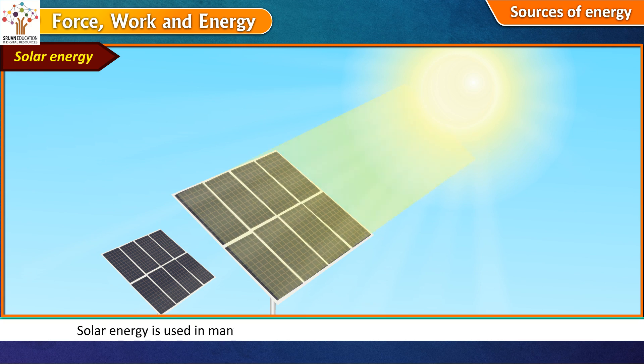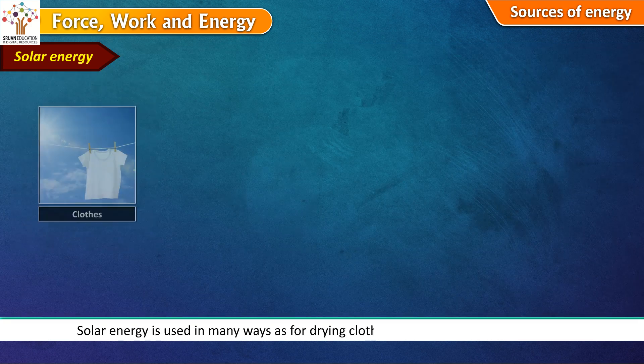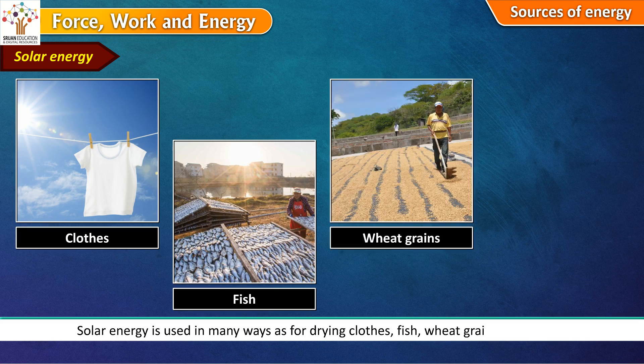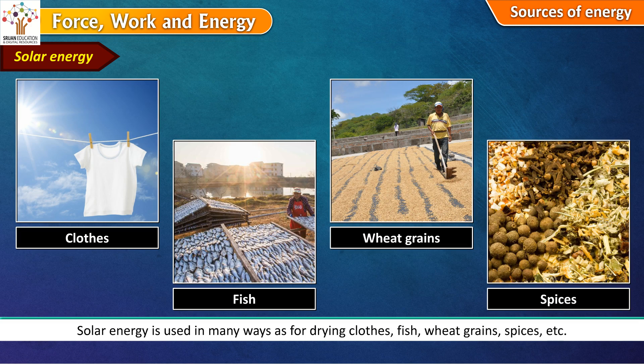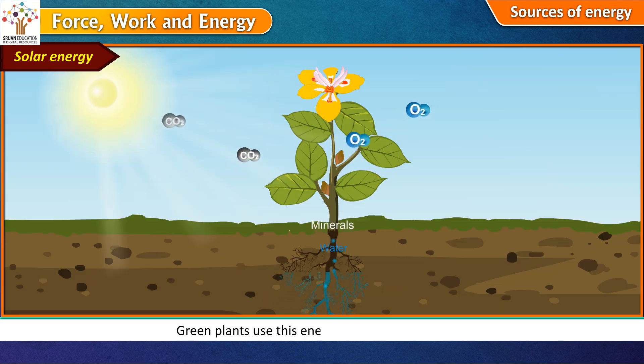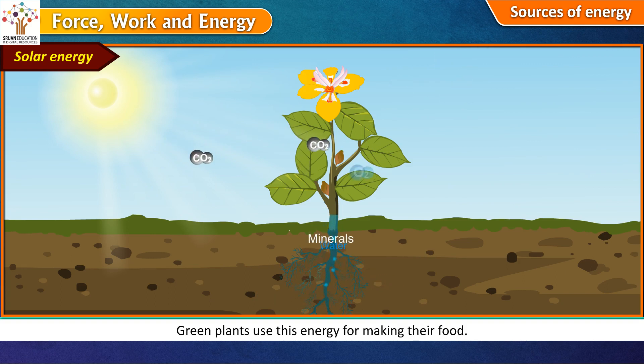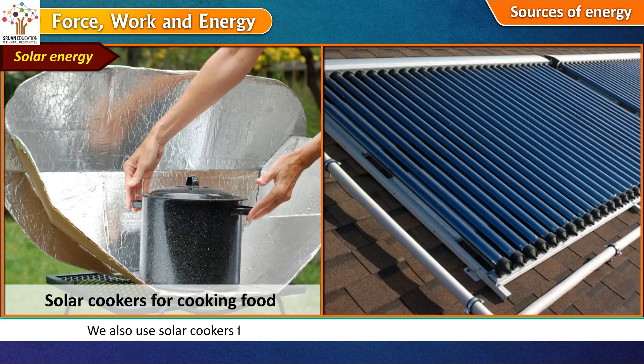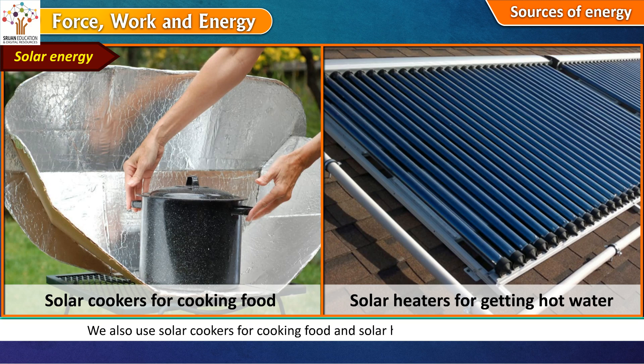Solar energy is used in many ways as for drying clothes, fish, wheat grains, spices, etc. Green plants use this energy for making their food. We also use solar cookers for cooking food and solar heaters for getting hot water.